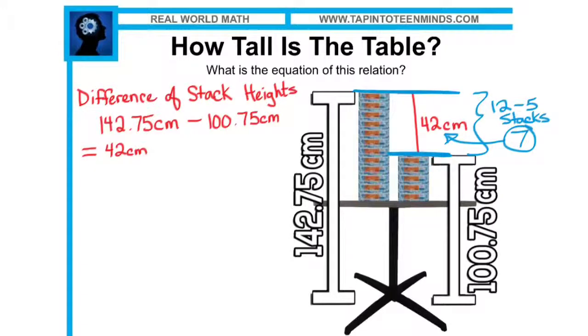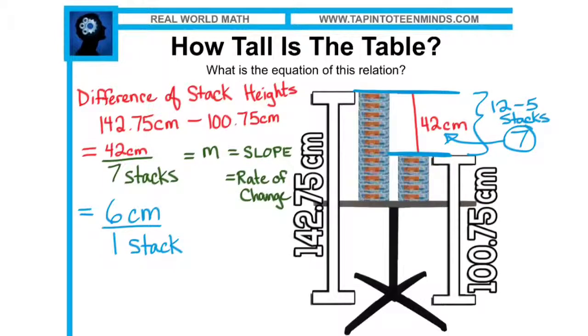So since we have seven stacks measuring up to 42 centimeters, that means we actually have a slope of 42 over seven, or a rate of change. And if we look at this further, and actually reduce this, 42 centimeters over seven stacks can also be written as six centimeters for every one stack, or a slope of six.